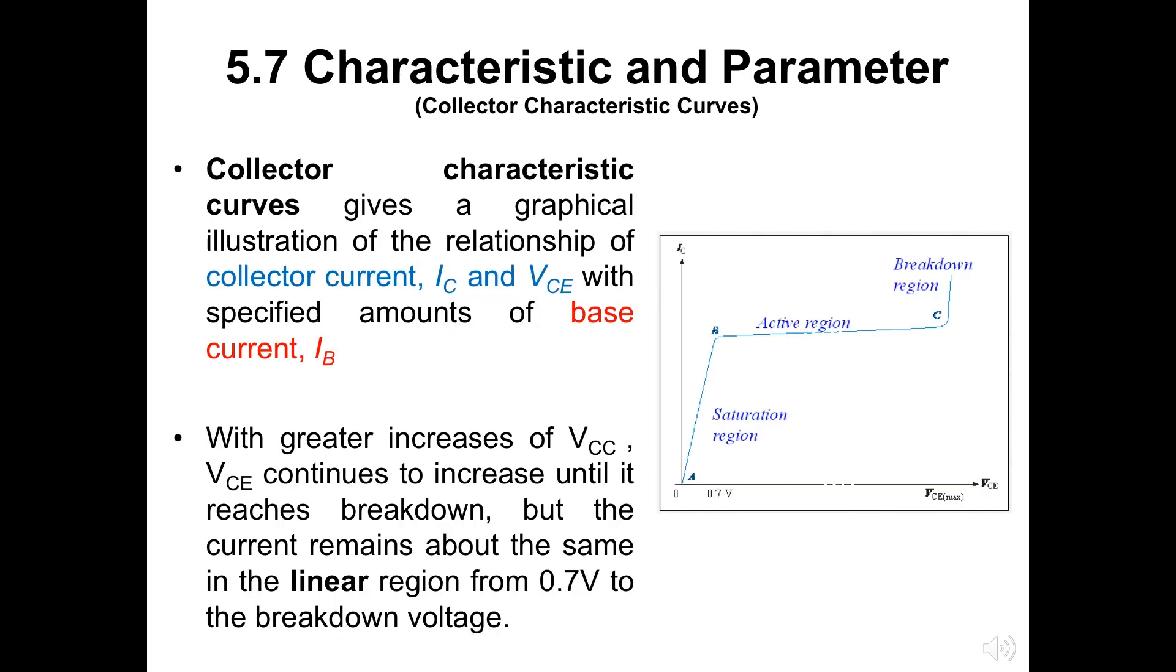First, we will discuss about the collector characteristic curves. It is generally illustrated by the figure on our right-hand side. Saturation region is the left-hand side of the graph. The middle and right side of the graph is referring to the active region B to C and breakdown region from point C. The collector characteristic curves give a graphical illustration of the relationship of collector current IC and VCE with specified amounts of base current IB. With greater increases of VCC, VCE continues to increase until it reaches breakdown, but the current remains about the same in the linear region from 0.7 volts to the breakdown voltage at point C.